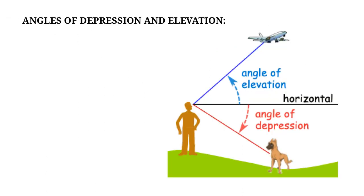Before the word problem, let's review angles of depression and angles of elevation. When you have a horizontal line, looking above it toward an object gives you the angle of elevation; looking below it gives the angle of depression. The most common mistake is not forming a horizontal line — always measure elevation and depression from a horizontal.